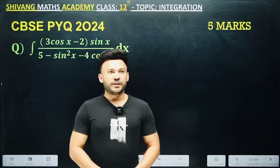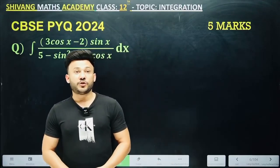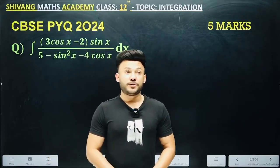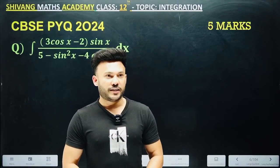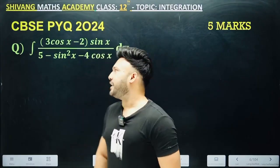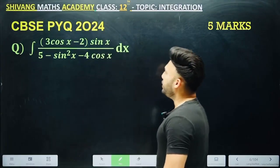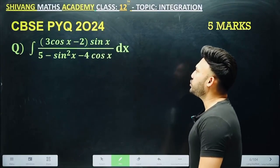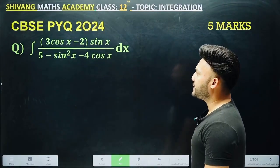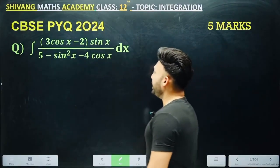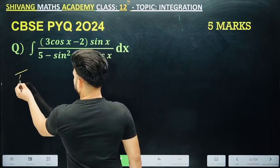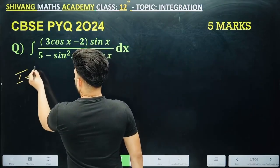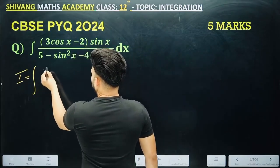Good evening to all the children. This question that you are seeing was asked for 5 marks in CBSE. How will you do it? Integrate: 3cos x minus 2sin x, over sin squared x minus 4cos x.